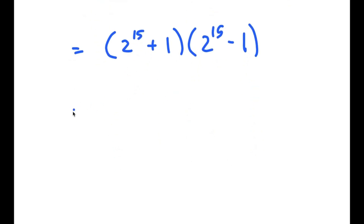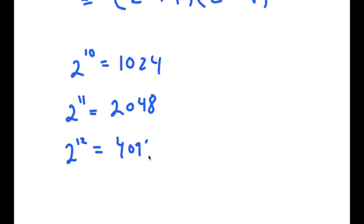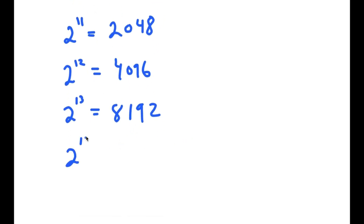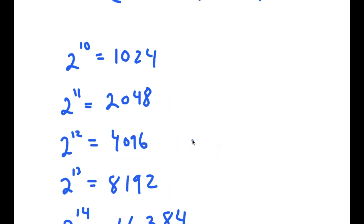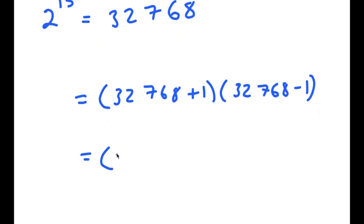Now, what's the value of 2 to the power of 15? Well, 2 to the power of 10 is 1024. 2 to the power of 11 is double that, which is 2048. 2 to the power of 12 is 4096. 2 to the power of 13 is 8192. 2 to the power of 14 is 16384. And 2 to the power of 15 is double that, which is 32768. So I have 32768 plus 1 times 32768 minus 1, which equals 32769 times 32767.